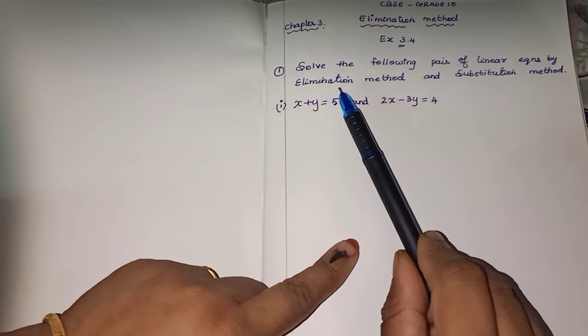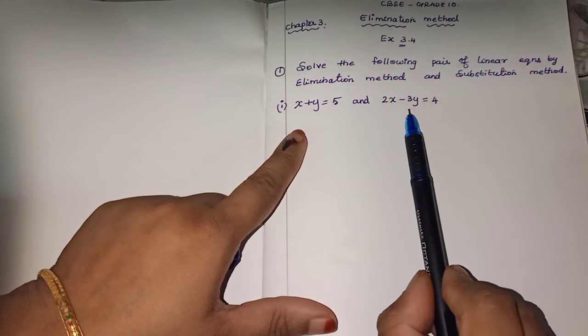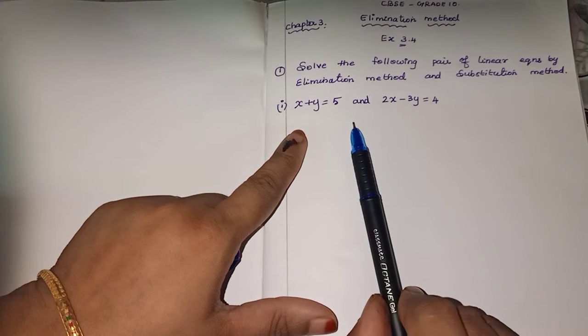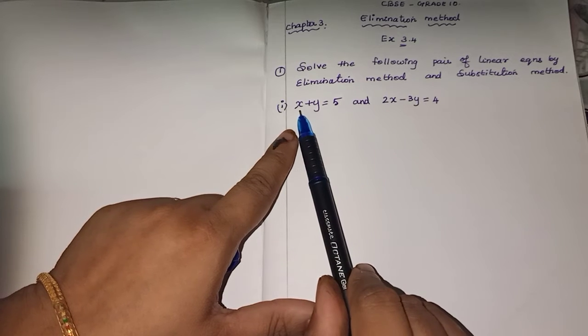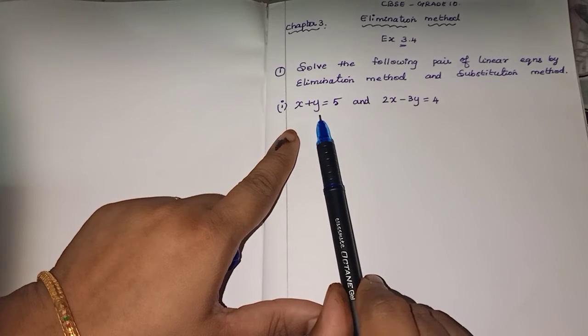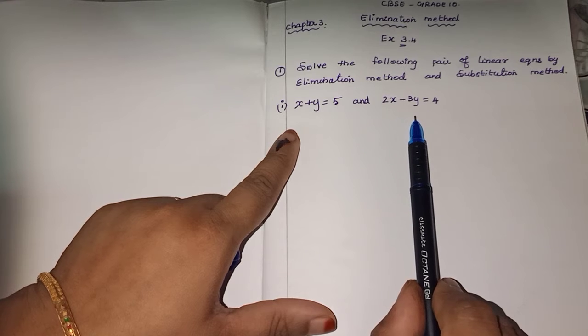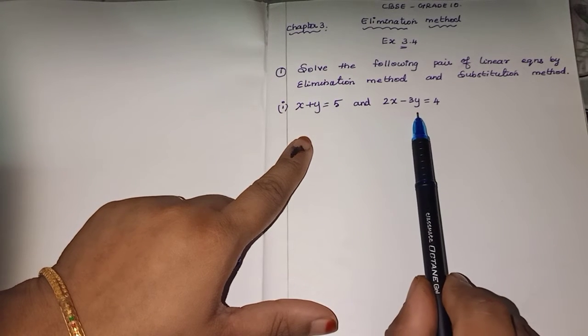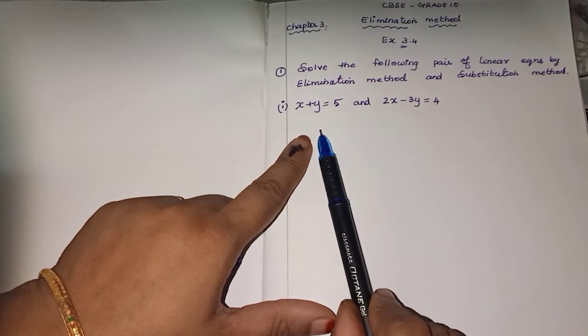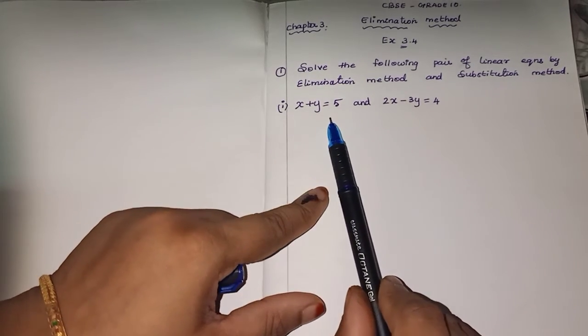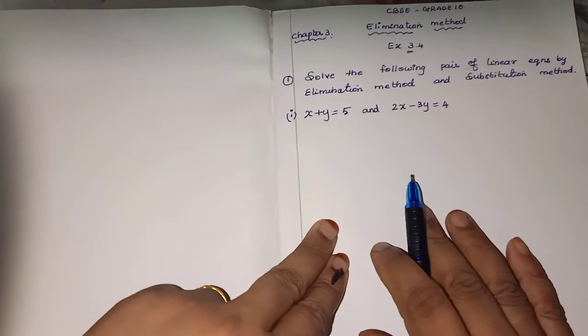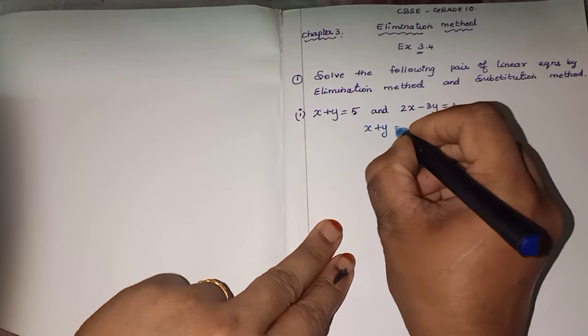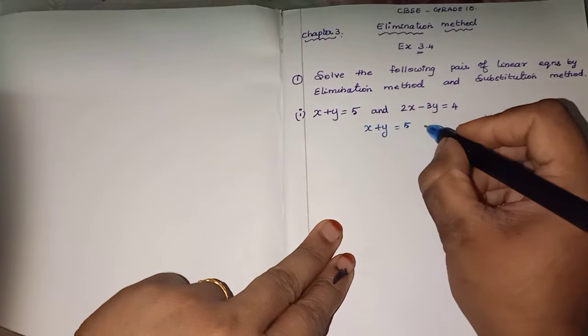Elimination means you are going to eliminate variables to get the values of the another variable, right? So here we have x variable, y variable. Here we have x variable, y variable. This is elimination method by adding or subtracting equations.